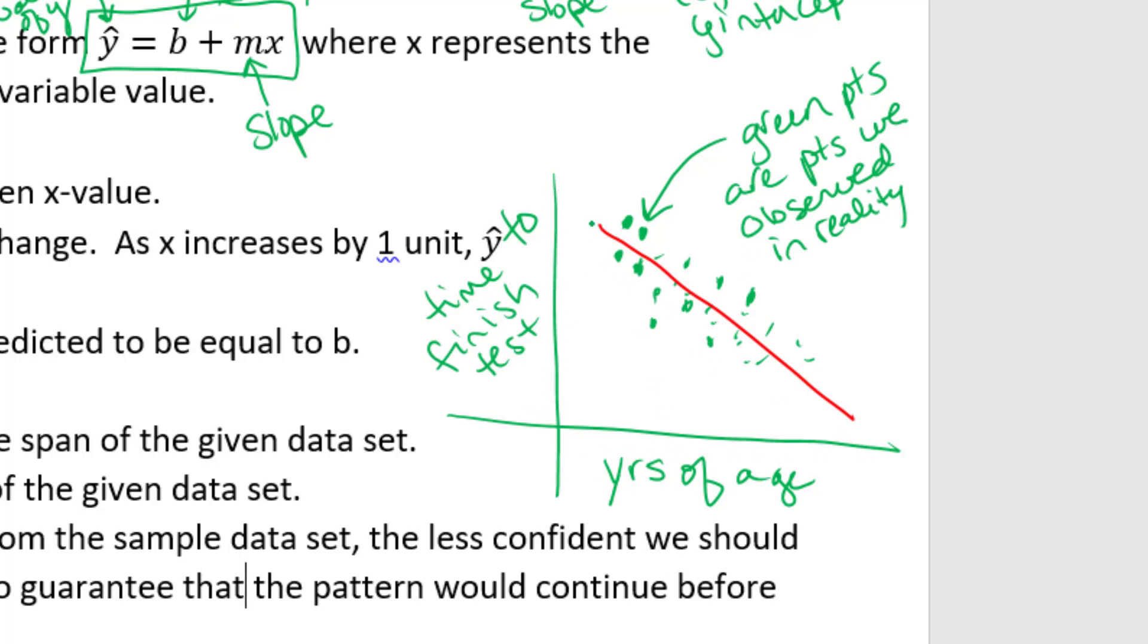So as they get older, it looks like it took them less time to take the test. So these green points would be for any particular person, the person's age and their time it took them to take this test. The green points then are what I actually observed in reality.